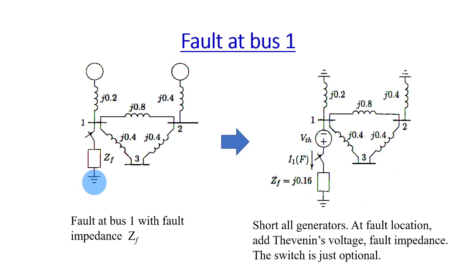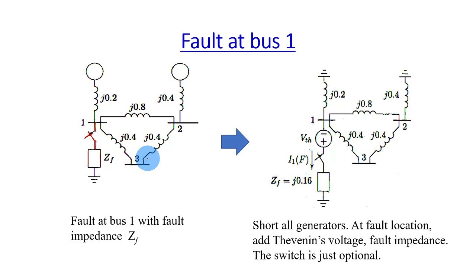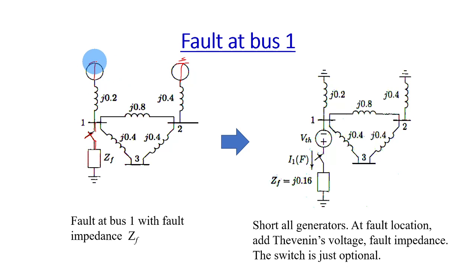You follow the same steps. The first thing you need to do is draw the location of the fault. You can draw it like this as a switch. The fault can be represented as a switch and the fault impedance to the ground. To start with the Thevenin method, we need to short all the voltage sources. There are two voltage sources here, voltage source number 2 and number 1 — we short them to ground.